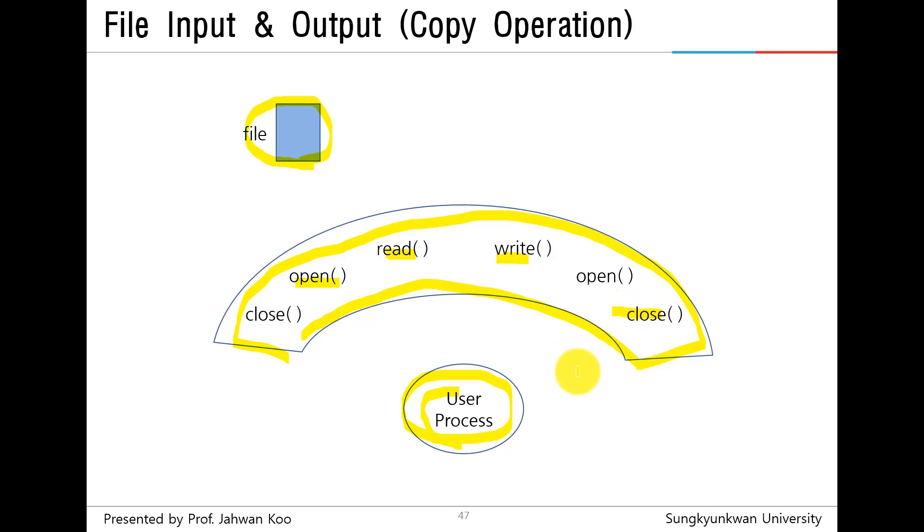Let's see the copy operation for an example. First, the user process calls open function in order to open file using file descriptor. The black one is file descriptor. File descriptor is very important because it is used to refer to all types of open files, including pipe, fifos, socket, terminals, devices, and regular files.